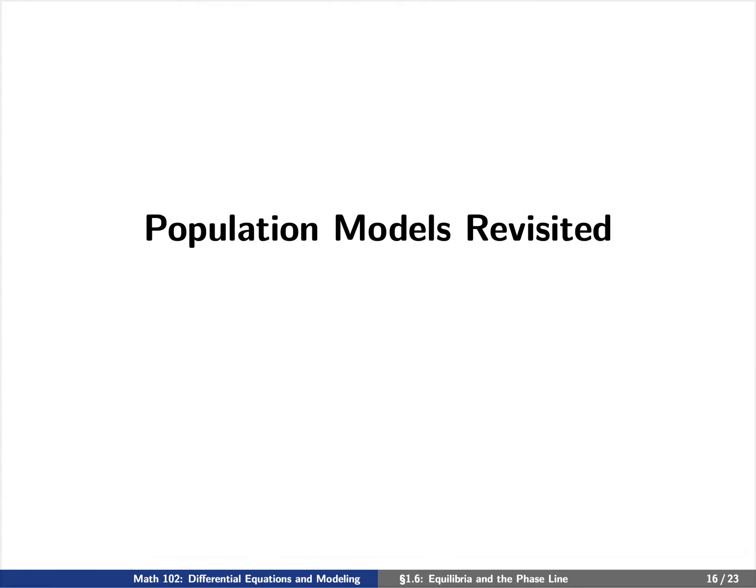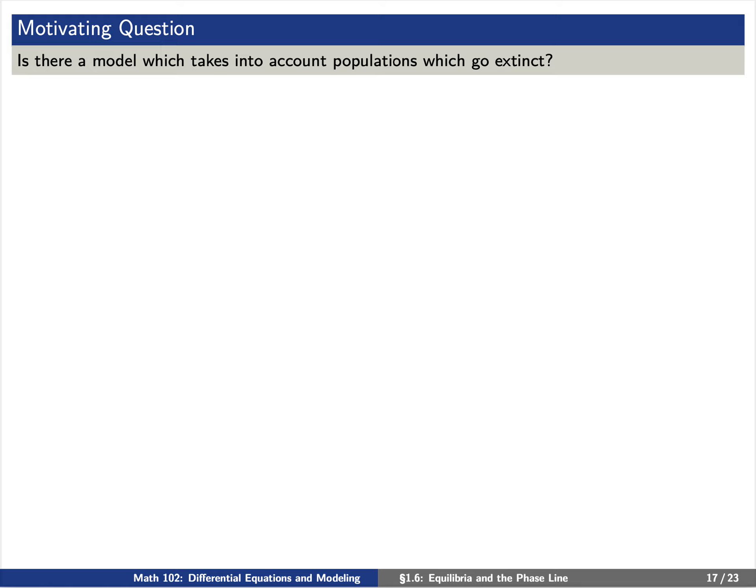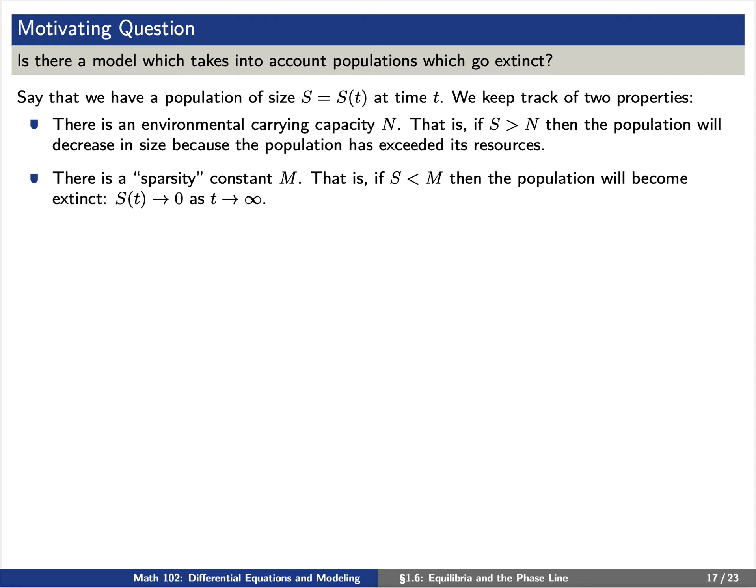Let's now return to the population models that gave us the motivating question. Is there a model which takes into account populations which go extinct? Let s(t) denote the population size at time t. We keep track of two properties: first, the environmental carrying capacity N — if the population size s exceeds N, the population decreases because it has exceeded its resources. Second, we introduce a sparsity constant m — if s is less than m, then the population will become extinct; that is, s(t) tends to 0 as t increases without bound.